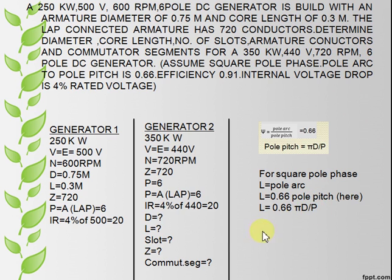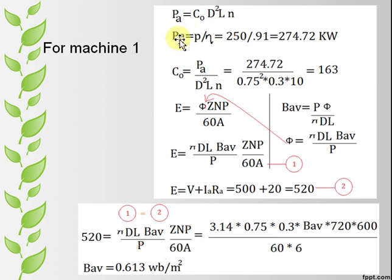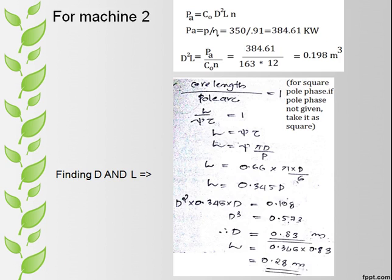For first machine, find the armature power by dividing output power with efficiency. Then find C₀ using power equation. Write the emf equation, then substitute for φ from equation of B of E, then name it as equation 1. We know another equation for emf, name it as number 2. Equate both numbered equations, we will get B of E from it. If the video is fast you can pause it and calculate it on your own and check the answer. You can do it easily because all other parameters are given, you just have to substitute it.